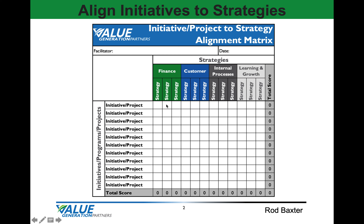The matrix will auto-calculate a total score for each initiative and project — that's the row — as well as a total score for each strategic objective. You can review the alignment matrix for strategic goals and objectives that do not have strong enough initiatives and projects to achieve success.